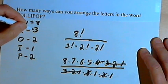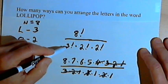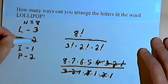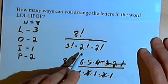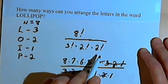So L repeats three times, or the size of the repeats. L repeats three times, we've got a 3 factorial in the denominator. O repeats twice, we've got a 2 factorial in the denominator. And P repeats twice, so once again we get a 2 factorial.